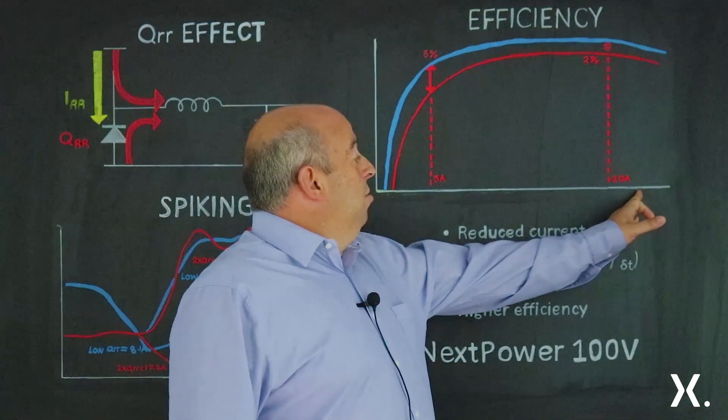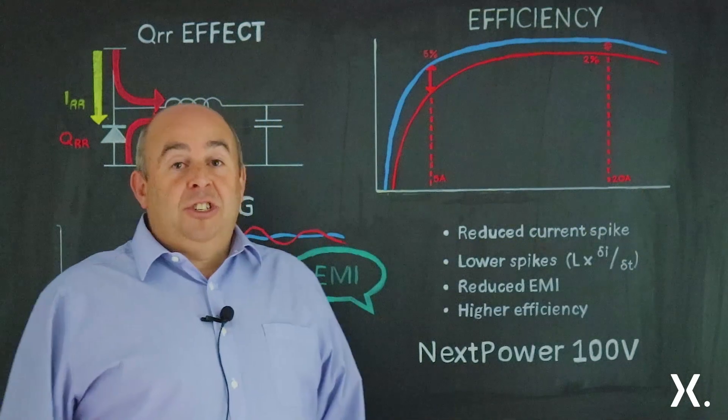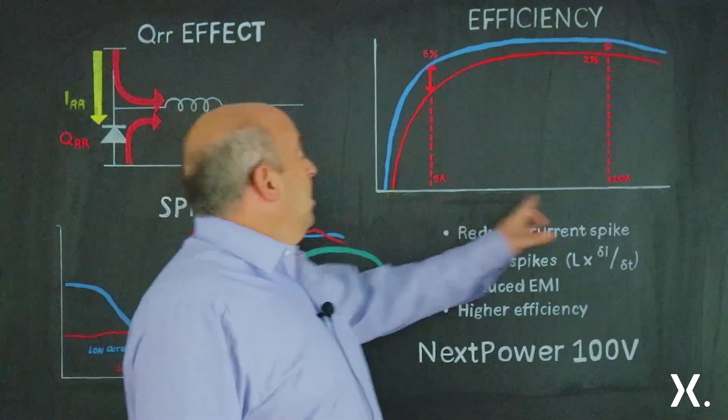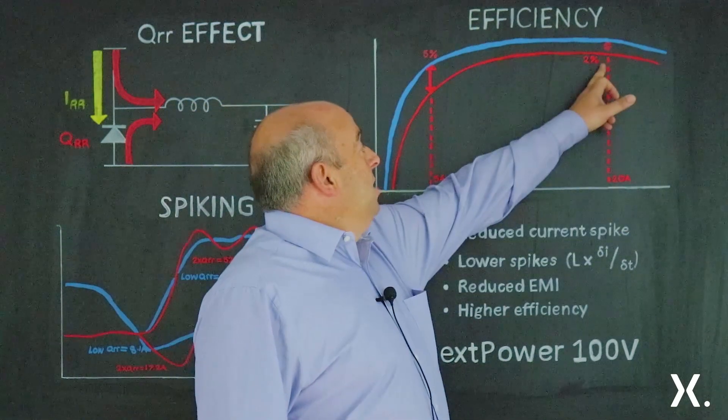At high load current, the losses are typically associated with the I² R of the MOSFET and the dynamic losses can be less significant.